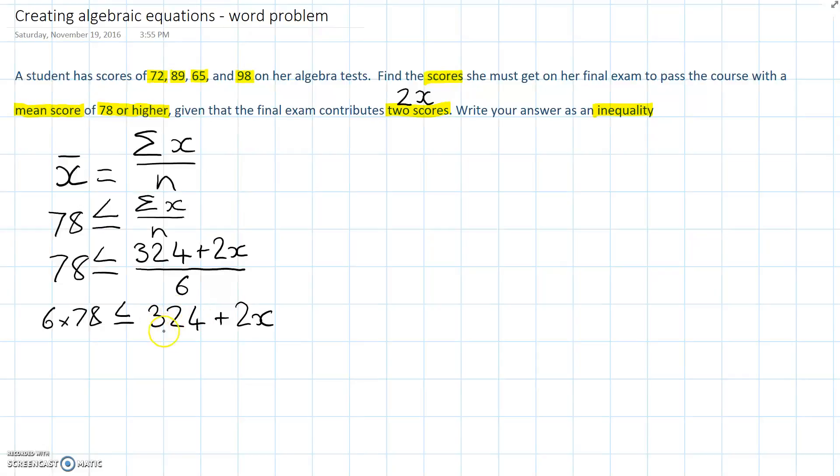Positive 324 becomes, take 324, and 6 times 78 is 468. So, we have 468 minus 324, and 2x left on the right hand side. 468 minus 324 is 144.